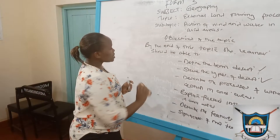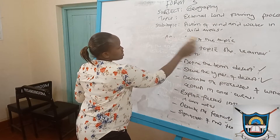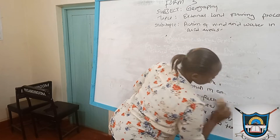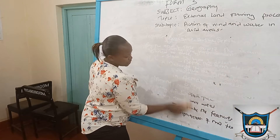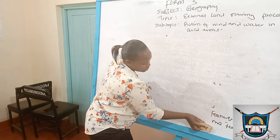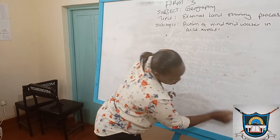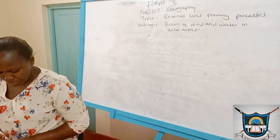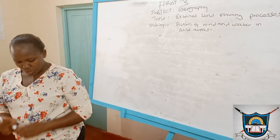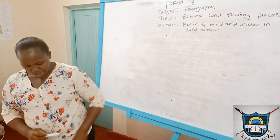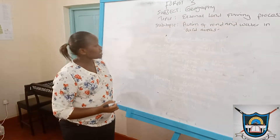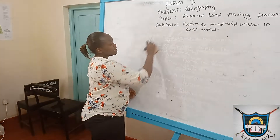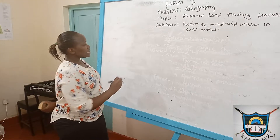We start with the first objective, which is the definition of the term desert. Now, the term desert is not a new one to you — you have come across it before. But it is important to define it because this is the term we are going to be using throughout this topic, so it is important to understand or redefine the meaning of the term desert.